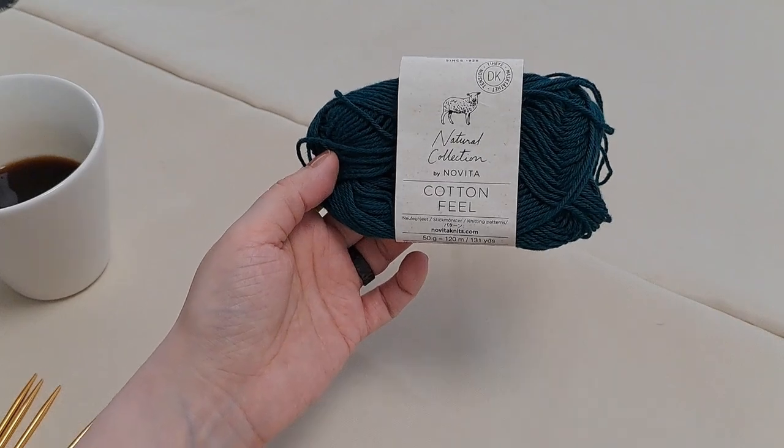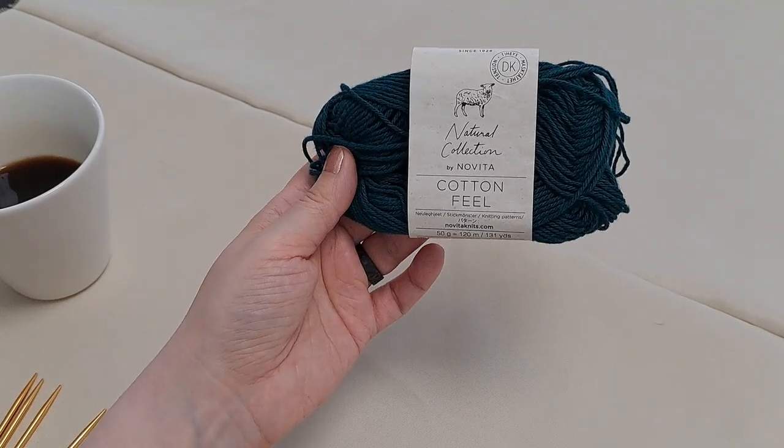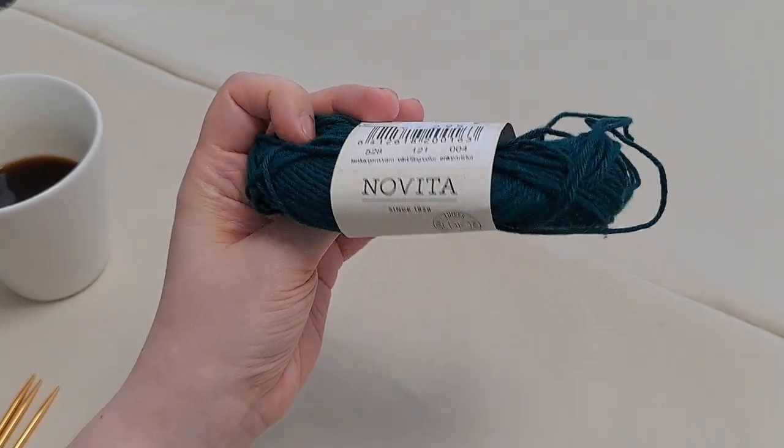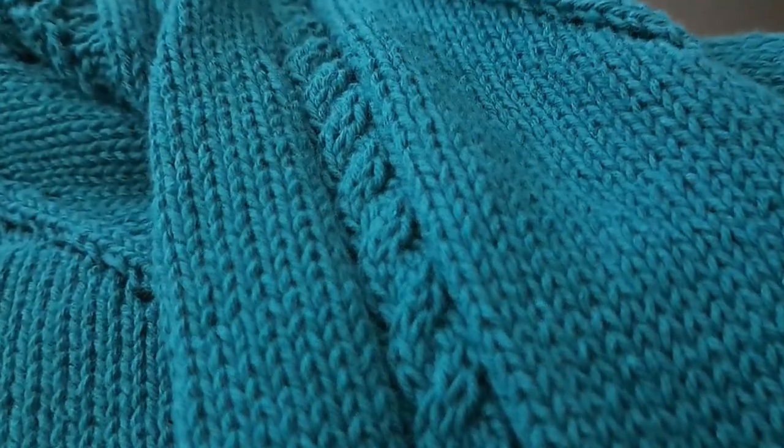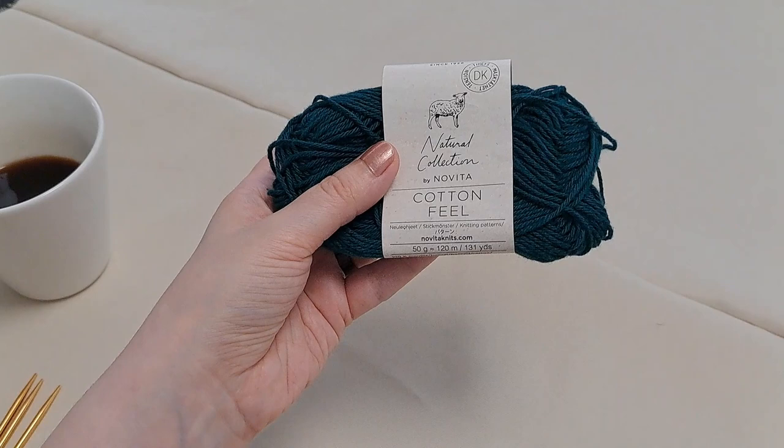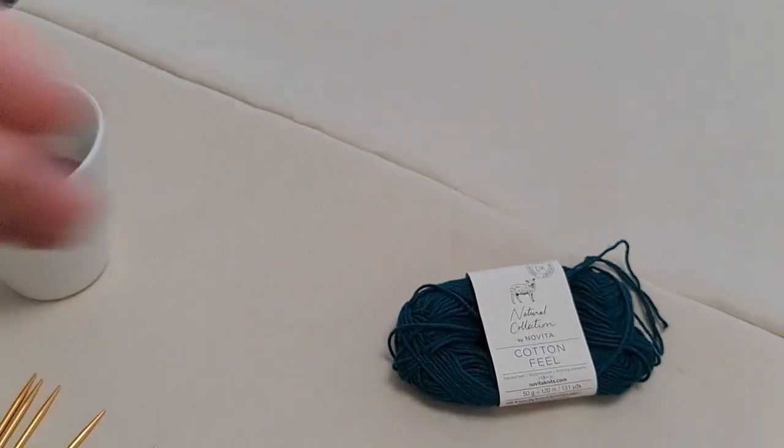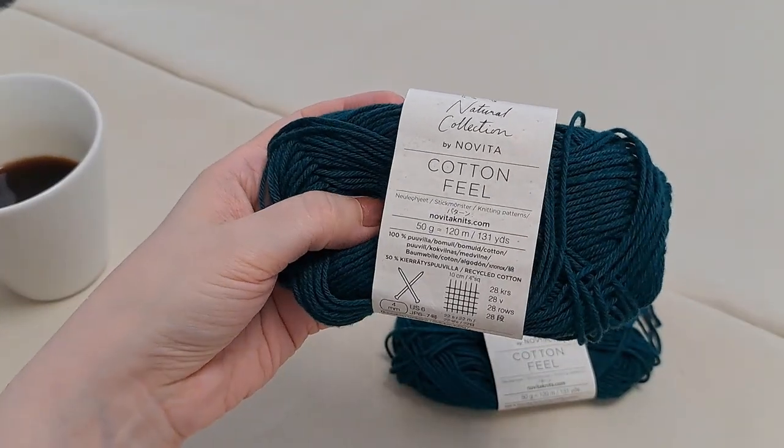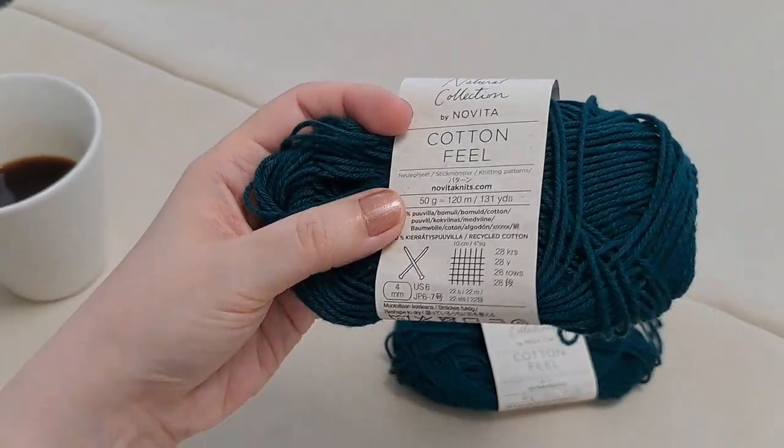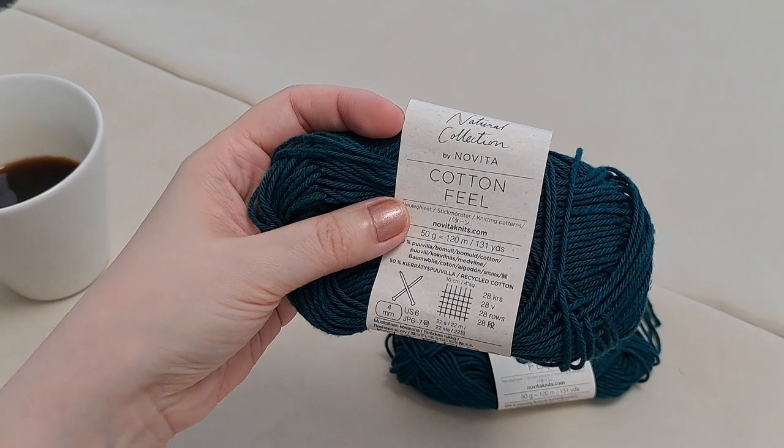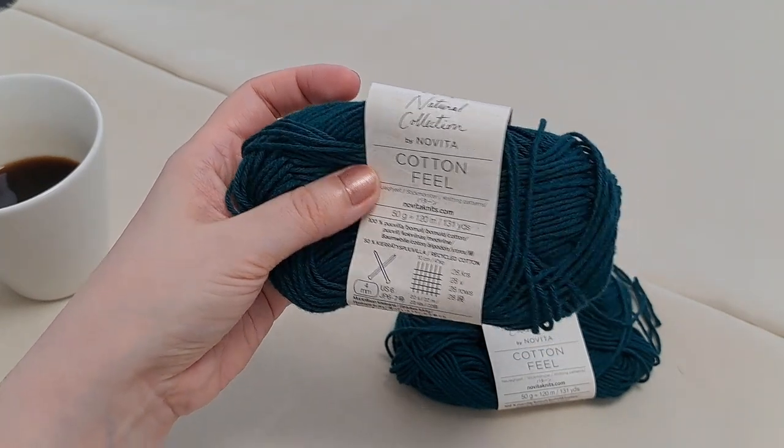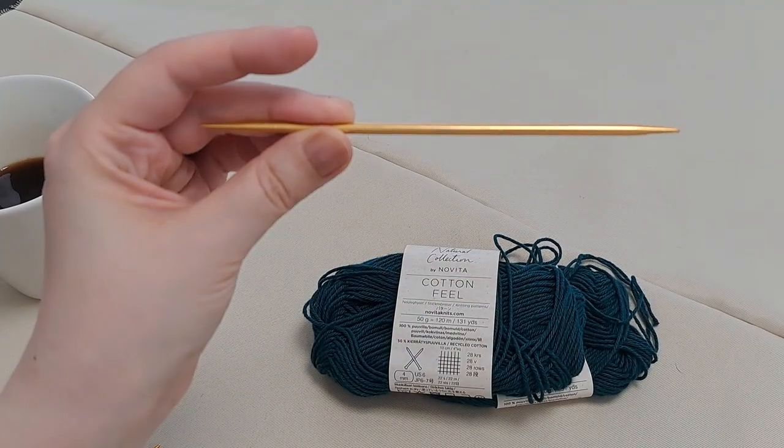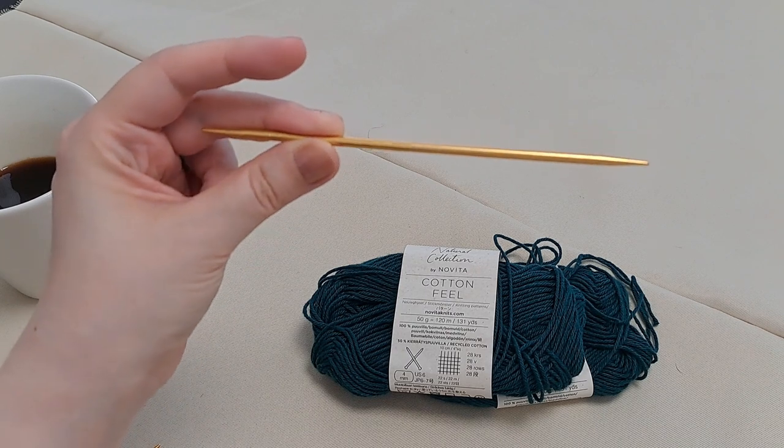This is a cotton yarn by Novita. I found five balls of this in a sale recently and I immediately used it for a cardigan. I have 20 grams left here and another 20 here. So this yarn is 50% recycled cotton. It's recommended for needle size 4mm or US 6. I'm using needle size 3.5mm because I want the knit fabric in these gloves to be relatively stiff.